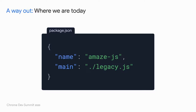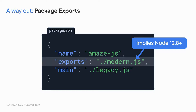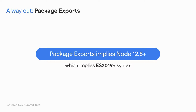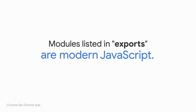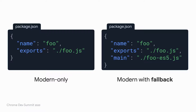Thankfully, this is now a solvable problem. Historically, NPM packages declared a main field pointing to some CommonJS code, which is generally assumed to be ES5. Recently, Node and a number of bundlers have standardized a new field called exports. It does a lot of things, but it has one very important attribute, which is that it's ignored by older versions of Node. This means that modules referenced by the exports field imply a Node version of at least 12.8, and Node 12.8 supports ES2019. That means that we have to assume modules referenced by the exports field are modern JavaScript. Going forward, there are at least two types of NPM packages I expect to see: modern-only, where there's just an exports field and that implies an ES2019 package; and then packages with both exports and main fields, where main provides an ES5 and CommonJS fallback for older environments.